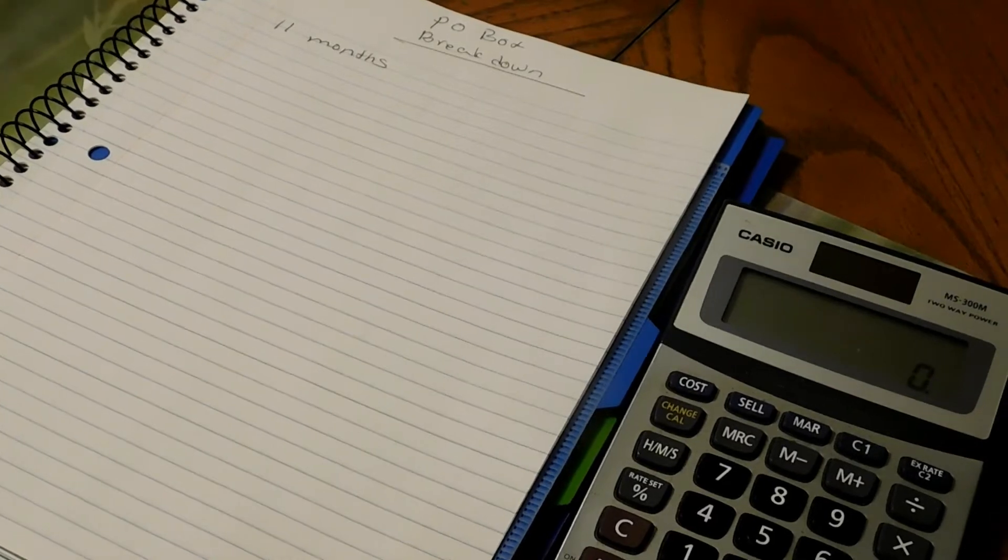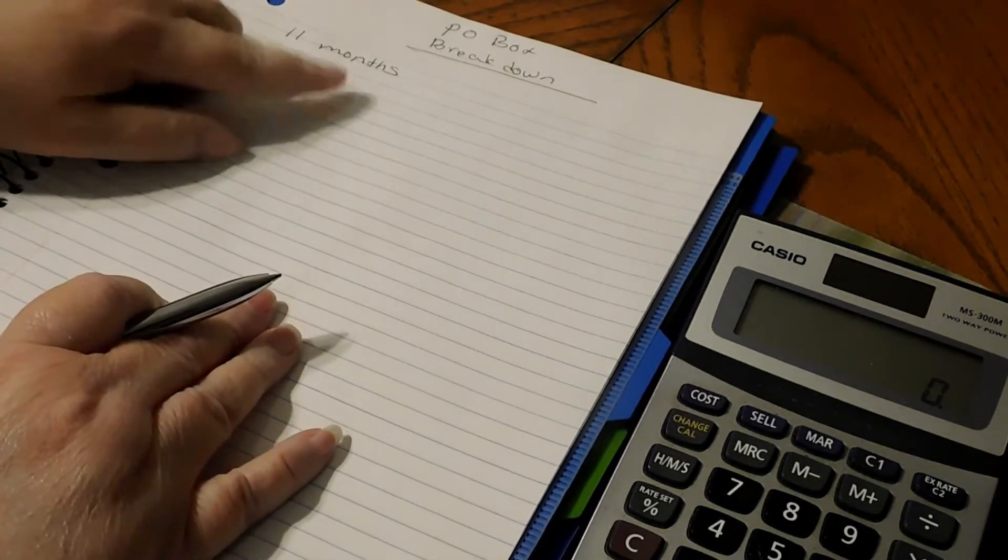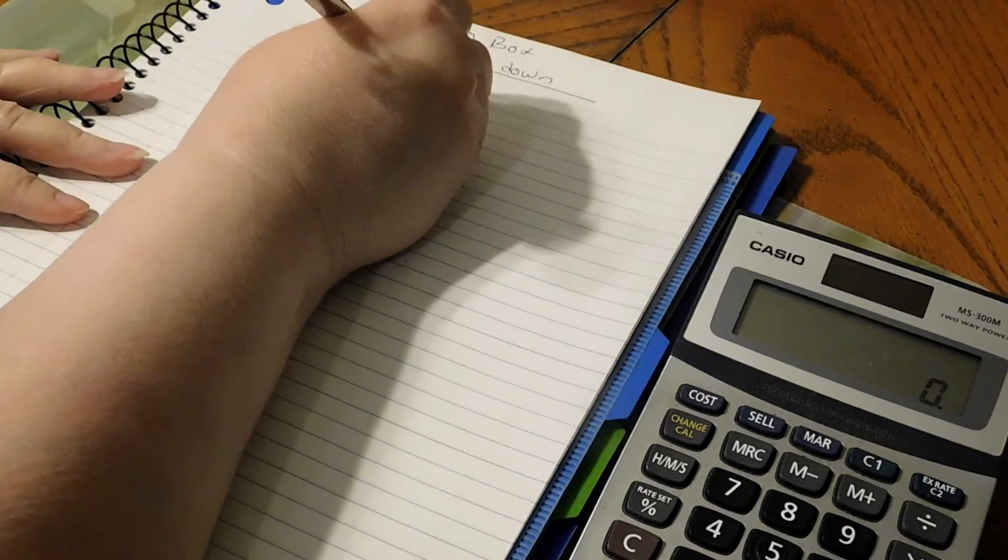This way you get like an extra month of paying, so you're actually paying for 13 months instead of 12 months. So we have 11 months is what we're going to do.